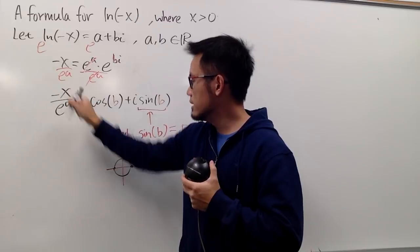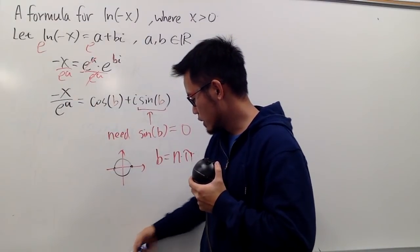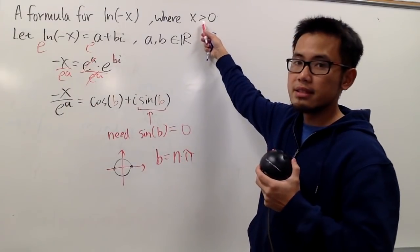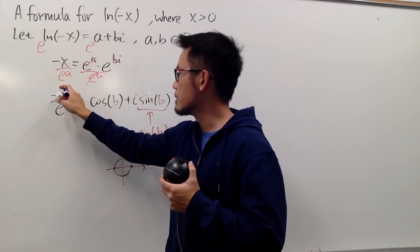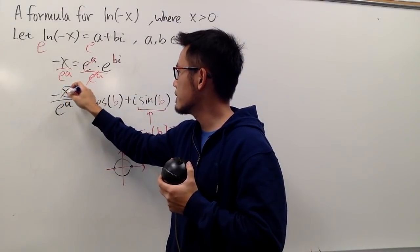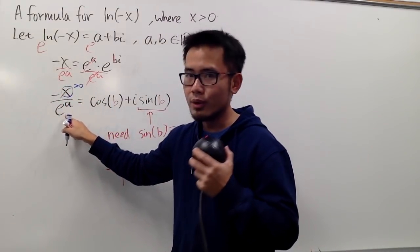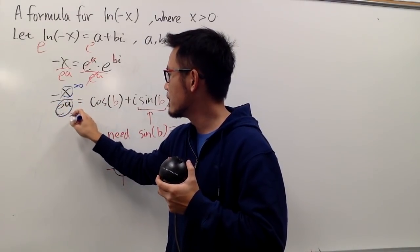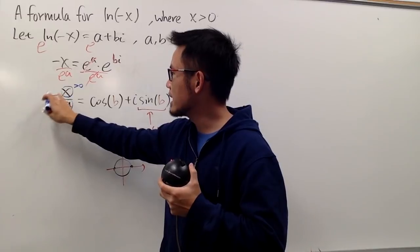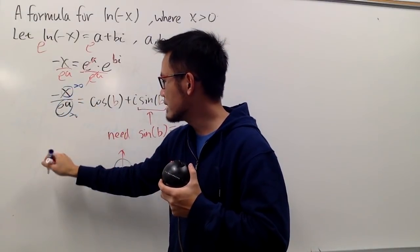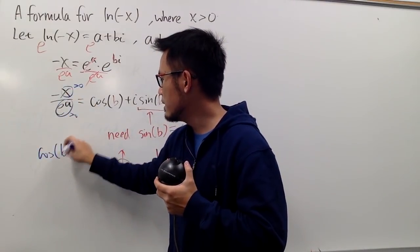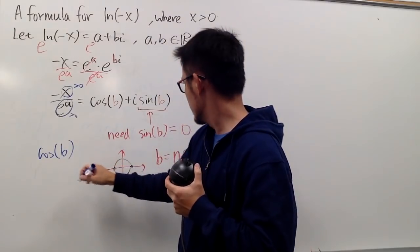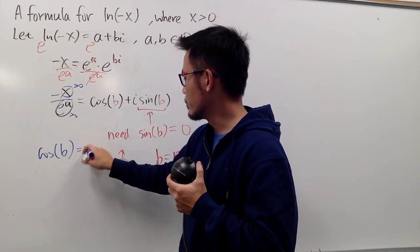Because x is greater than zero, so this is positive. This is positive. And then, we know a is real, so e to the a is always positive. So, this is actually suggested as negative, positive, negative. So, we must have cosine b to be negative. Let me just say equal to negative.